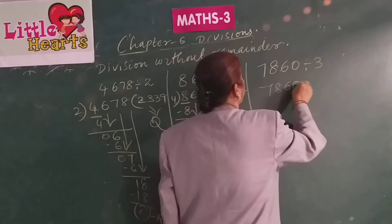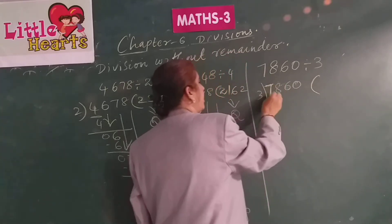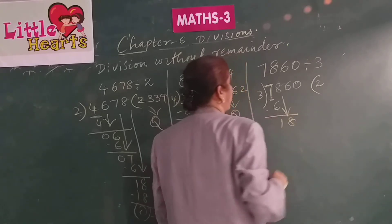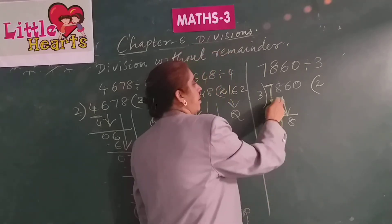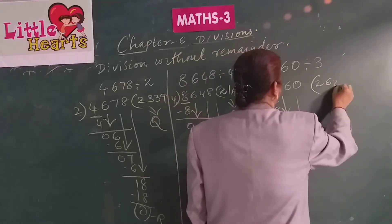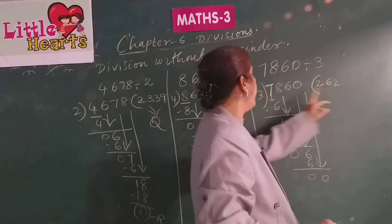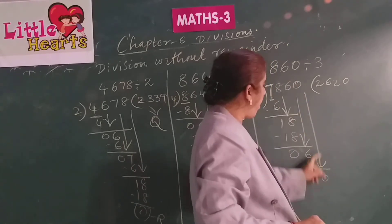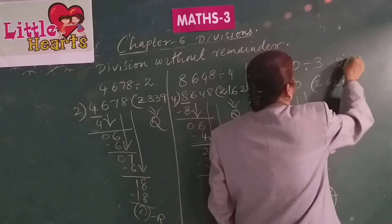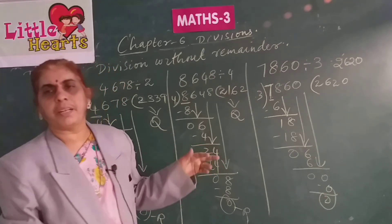Consider 7860 divided by 3. Take the thousands digit 7; 7 is greater than 3. Read 3 table: 3 twos are 6; 7 minus 6 is 1. Bring down 8 to get 18: 3 sixes are 18; 18 minus 18 is 0. Bring down 6: 3 twos are 6; 6 minus 6 is 0. Bring down 0: 3 zeros are 0 — never leave this 0 as remainder; always divide the brought-down number. So 2620 is the quotient.